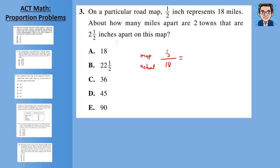So on the map, we have a half an inch and the actual that represents 18 miles. All right. And then you want to say this is equal to the two towns are two and a half inches apart. So again, on the map, it's two and a half and we want to find out the actual.